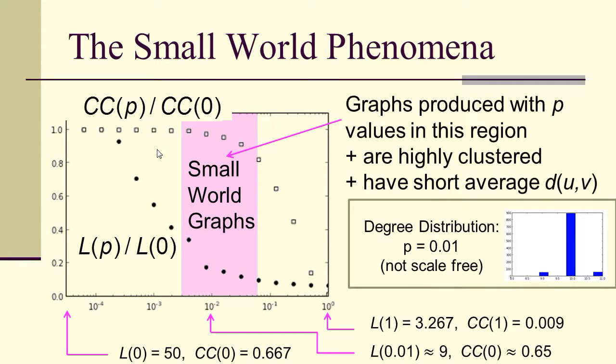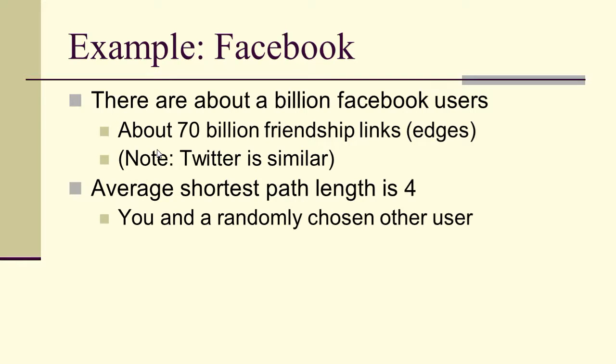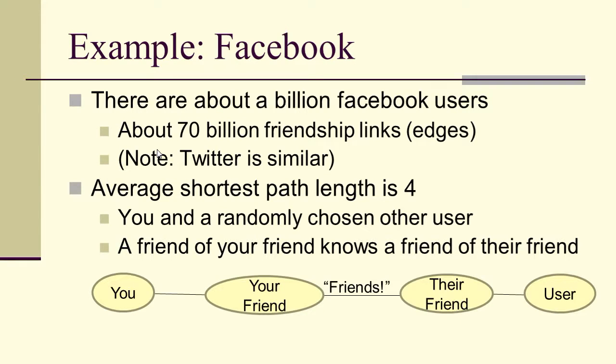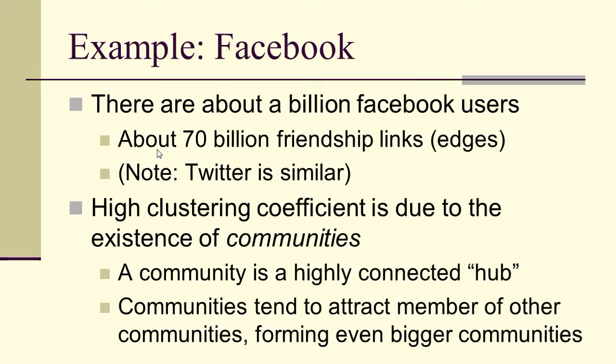Now, their degree distribution, however, is not scale-free. So let's look, for example, at Facebook. There are about a billion Facebook users, about 70 billion links, and Twitter is similar. The average shortest path length in Facebook is 4. You and a randomly chosen somebody else, a friend of your friend, knows a friend of their friend. So on average, there's only four links between you and anybody else in the world through Facebook. Four degrees of separation.